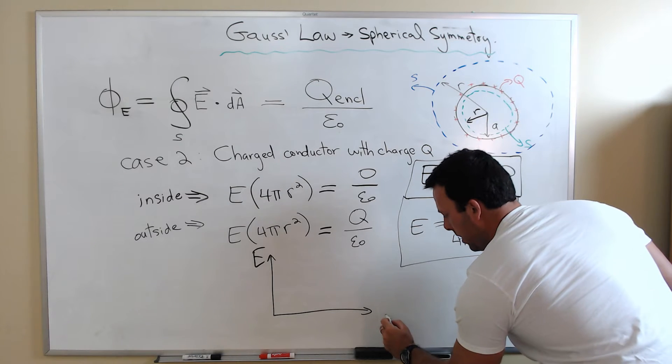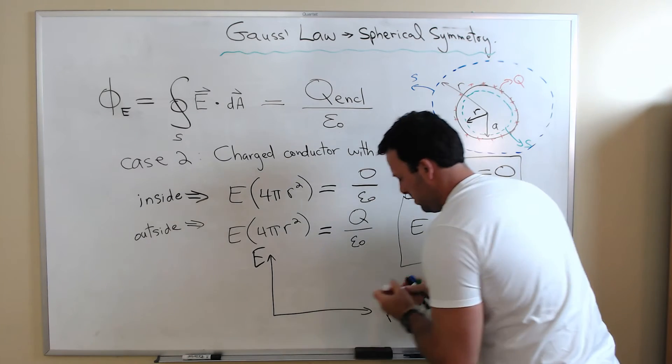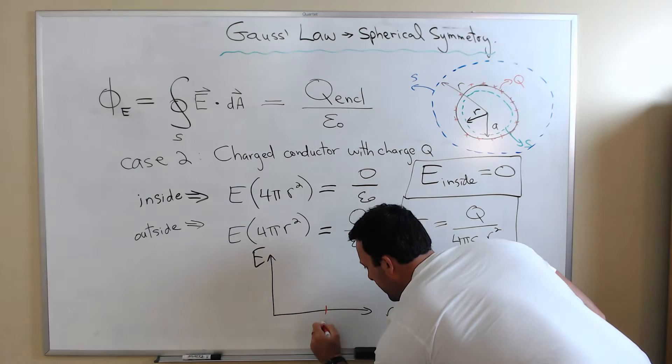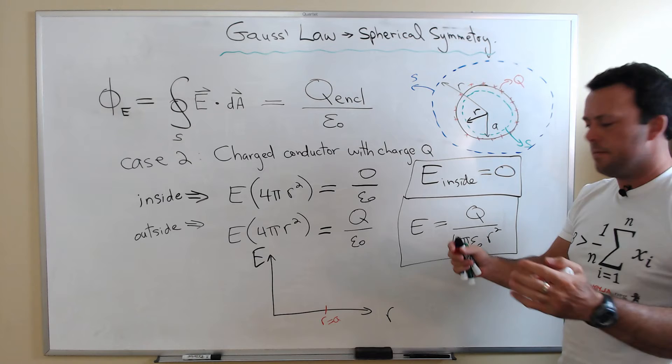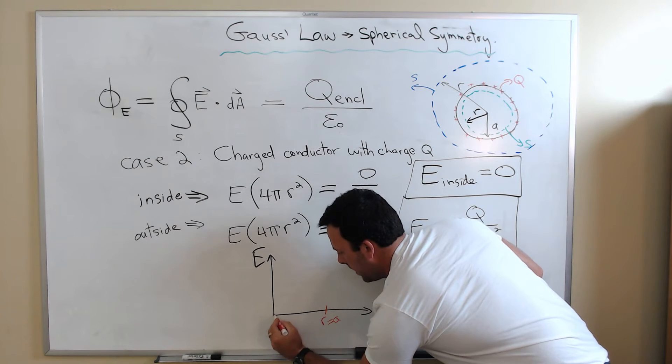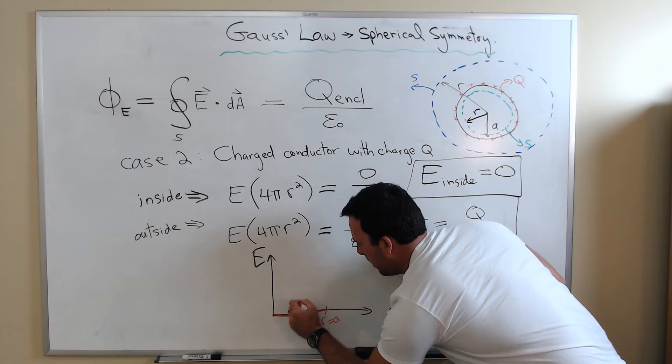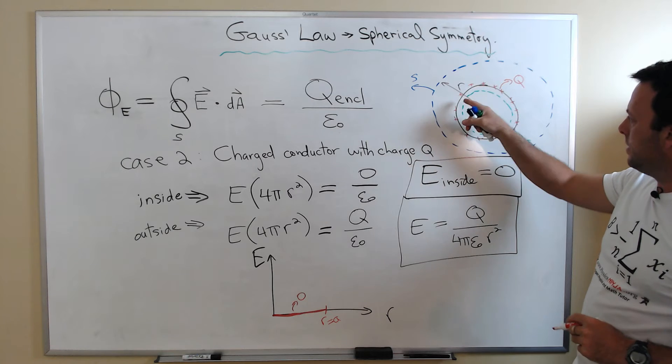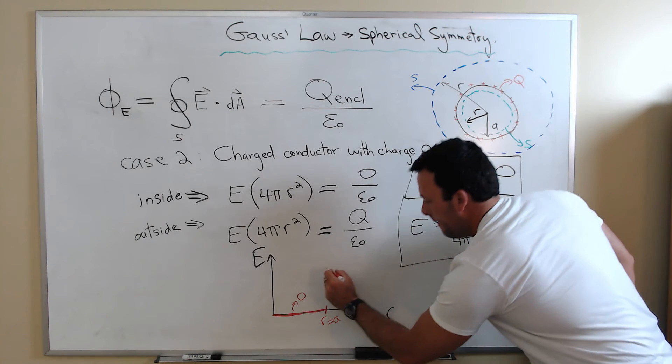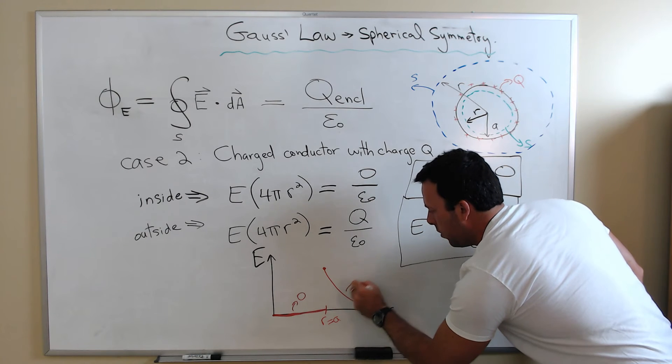So if you were going to actually just sketch what the electric field magnitude looks like as a function of distance R, this is what you would get. So you would get zero all the way until the radius is actually the radius of the conducting sphere. So you'd get a line like this. Zero here. And when you're outside this conducting sphere, you get something that falls off as 1 over R squared.